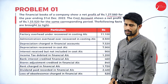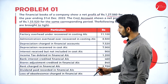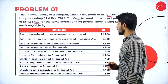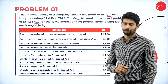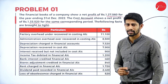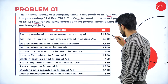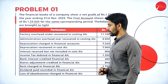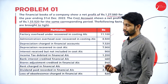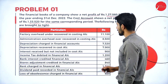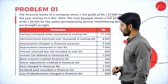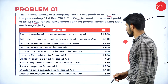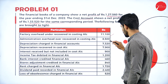The following facts are brought to light. First, factory overhead under recovered in cost accounting: Rs. 11,100. Next, administration overhead over recovered in cost account: Rs. 8,500.